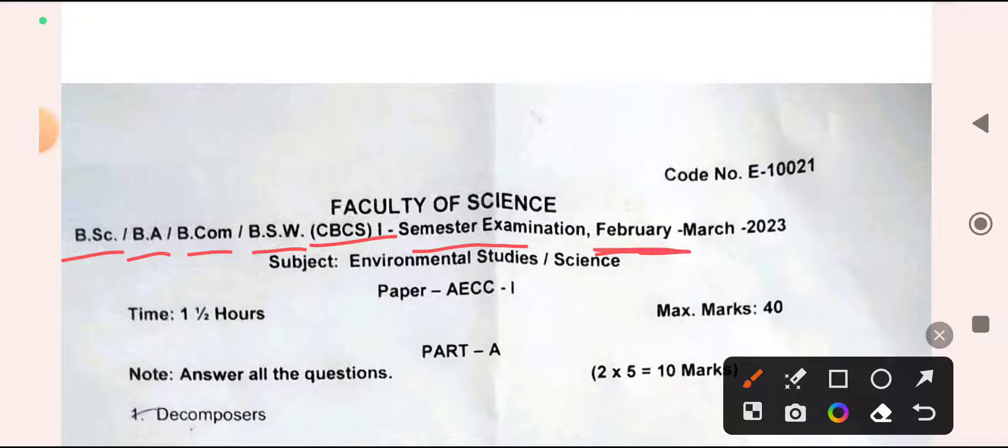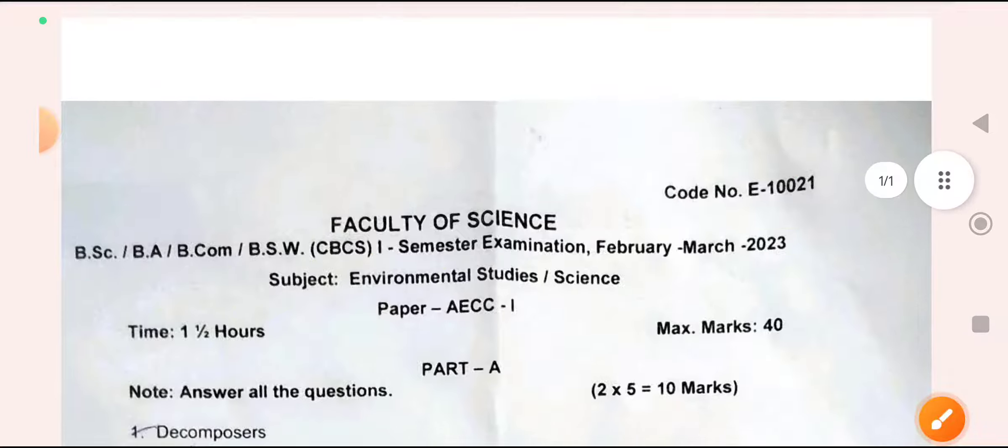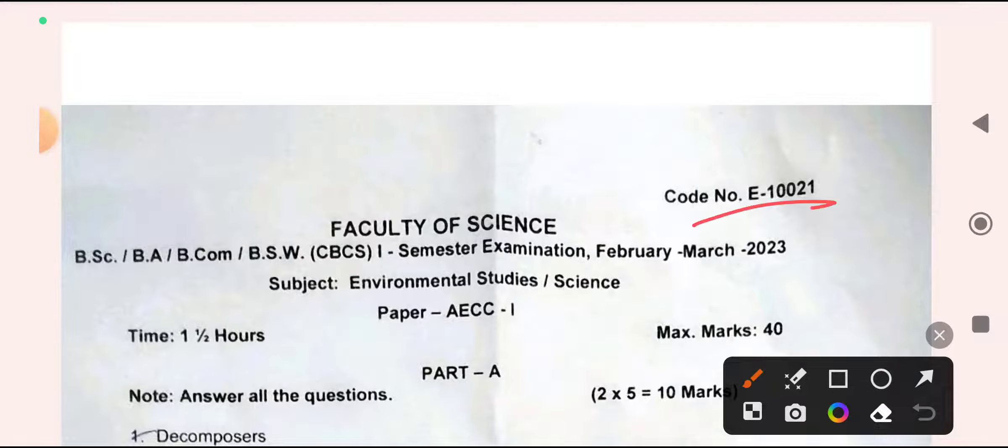This was previously asked in the OU exam February-March 2023. Please check your question paper code with your hall ticket. The question paper code will be given on the hall ticket. Please check that with your question paper code. If they are matching, then only you write that one.